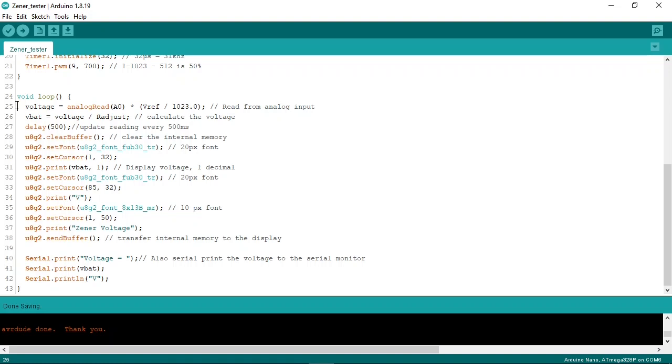Now we enter the loop. We read the voltage on analog input A0 and then calculate the actual voltage. We wait 500 milliseconds and here we write the results to the OLED display. And we write the same to the serial monitor. Now let me show you how to do the calibration.